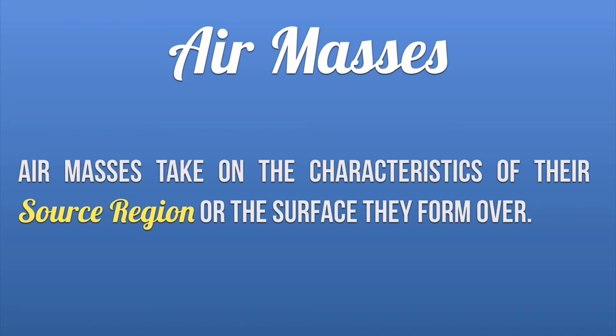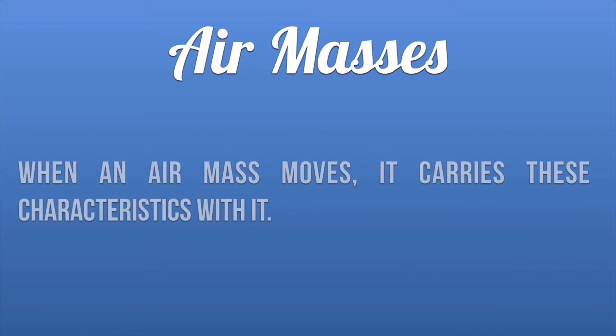If an air mass forms over a warm area, it's going to be warm air. If it forms over a cold area, it's going to be cold air. And when an air mass moves, it carries these characteristics with it.